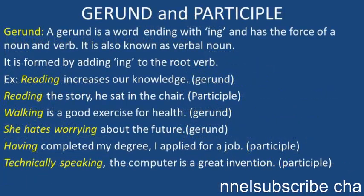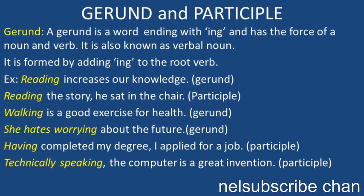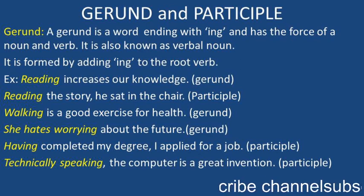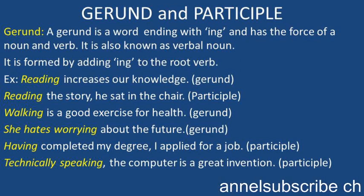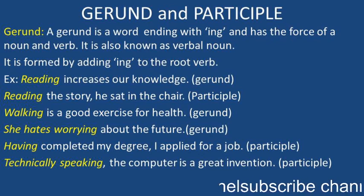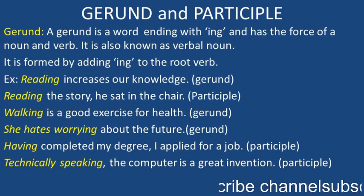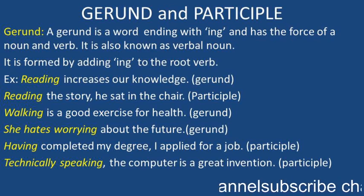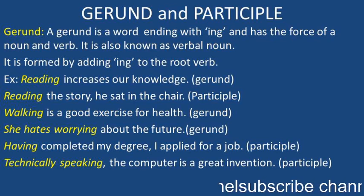Let's look at gerund and participle. A gerund is a word ending with -ing and has the force of a noun and verb. Therefore it is also known as a verbal noun. It is formed by adding -ing to the root verb. Example: Reading increases our knowledge — here reading is considered as a noun, called a gerund. Reading the story, he sat in the chair — here reading is used as a participle. Walking is a good exercise for health — again this is a gerund, considered as a noun. She hates worrying about the future — here it is considered as a gerund.